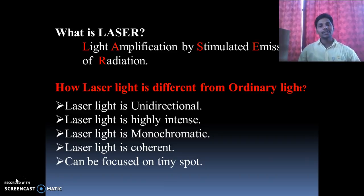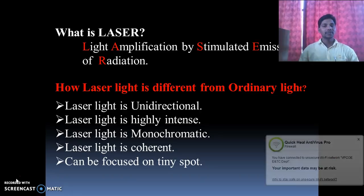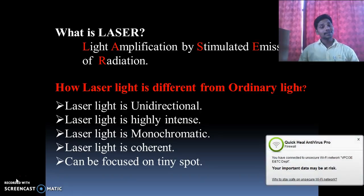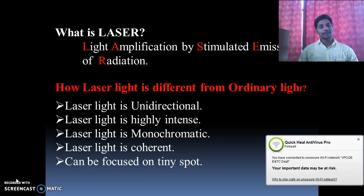First we look at how laser light is different from ordinary light. The first difference is that laser light is unidirectional, but ordinary light is not unidirectional — it moves in all directions. Second, laser light is highly intense, while ordinary light is not as intense as compared to laser light.